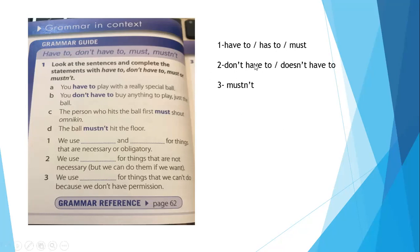We use 'mustn't' for things that are very strongly prohibited — like when I say you must not do something. We use 'mustn't' for things that we can't do because we don't have permission. So 'must' and 'must not' are stronger than 'have to' or 'don't have to'.